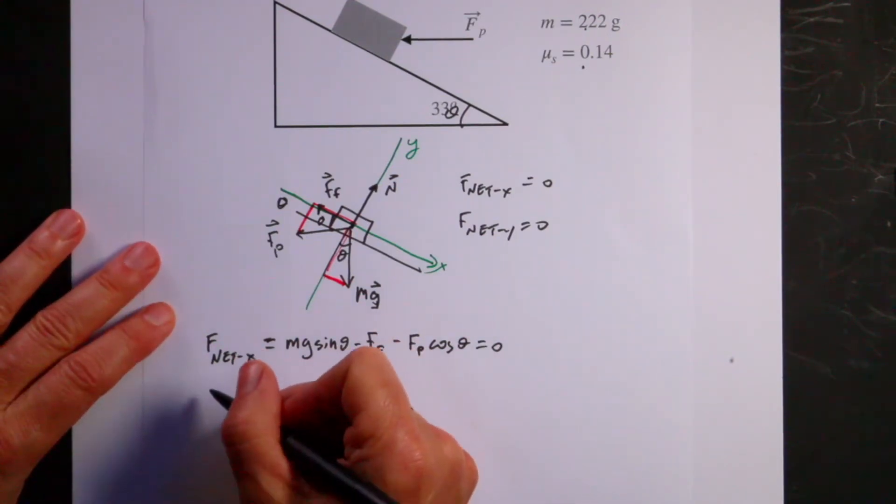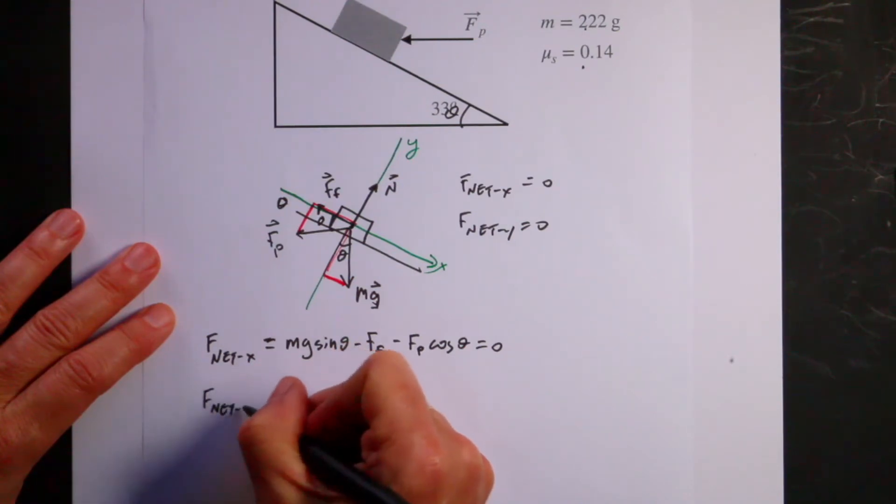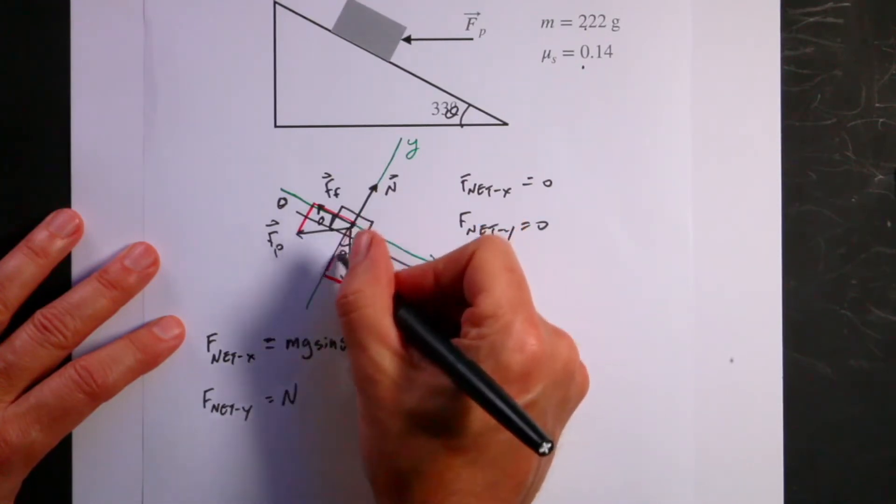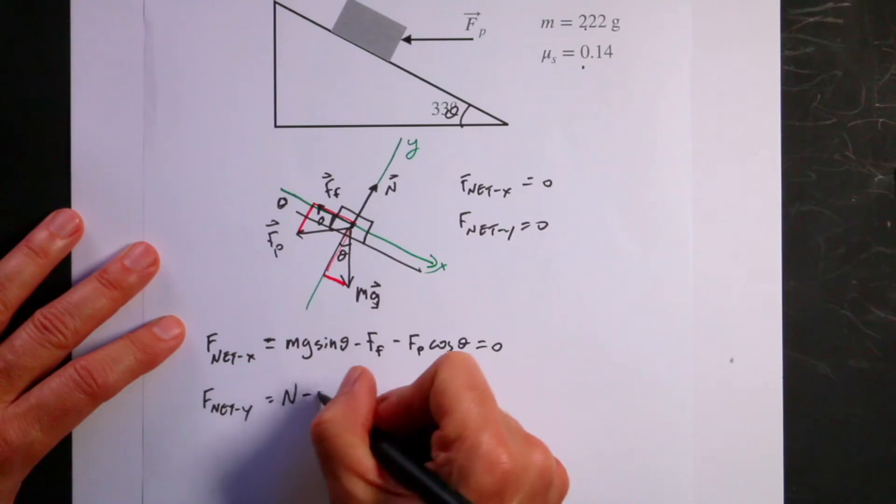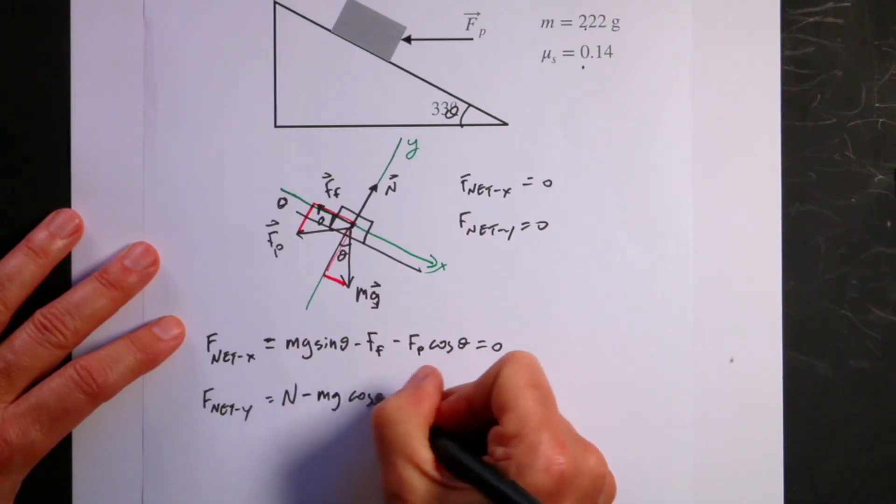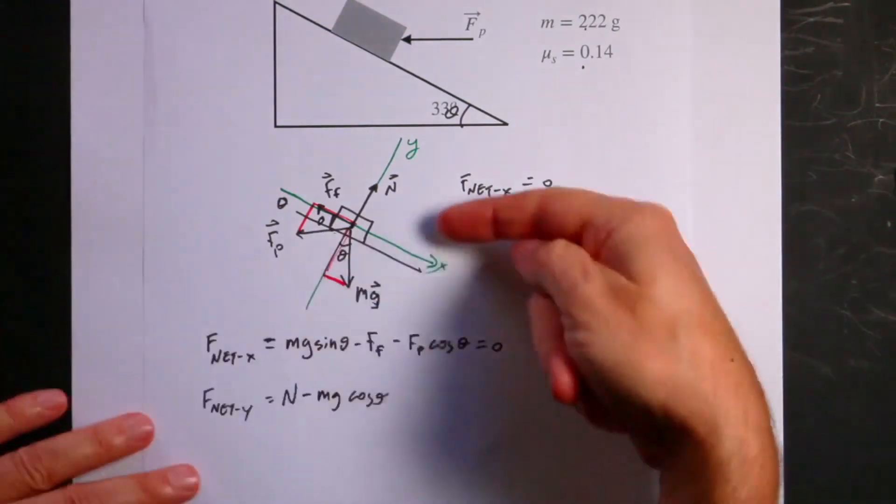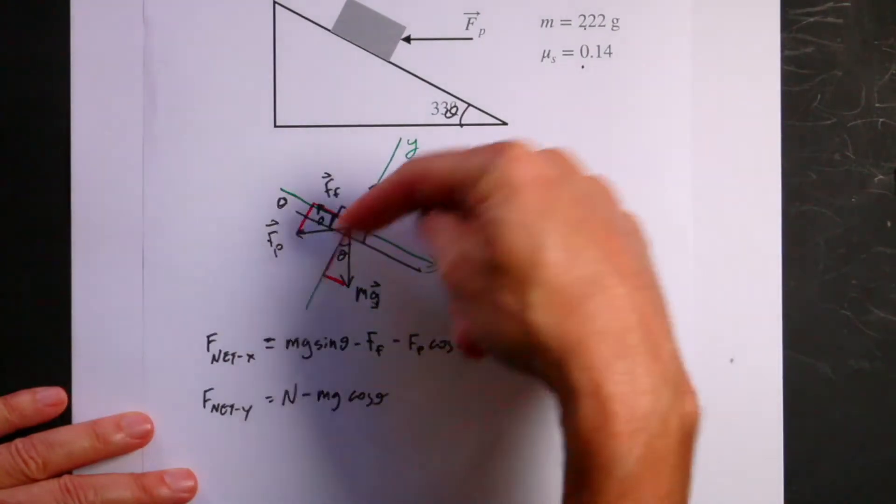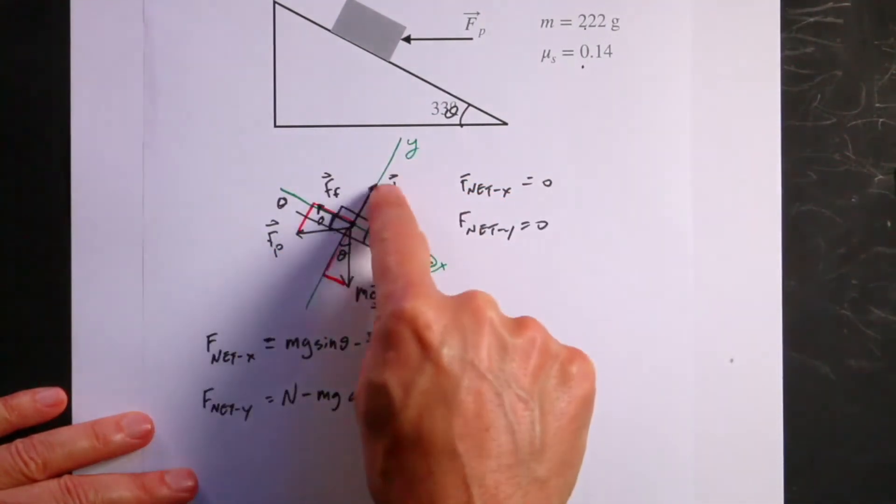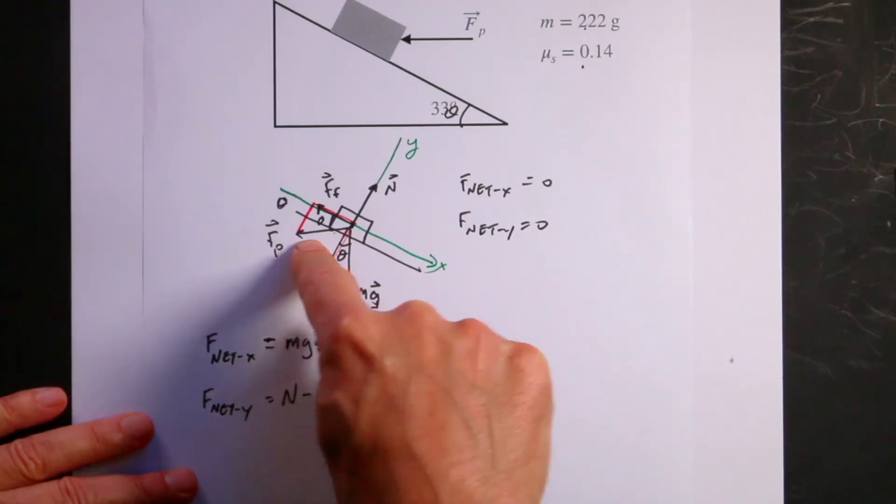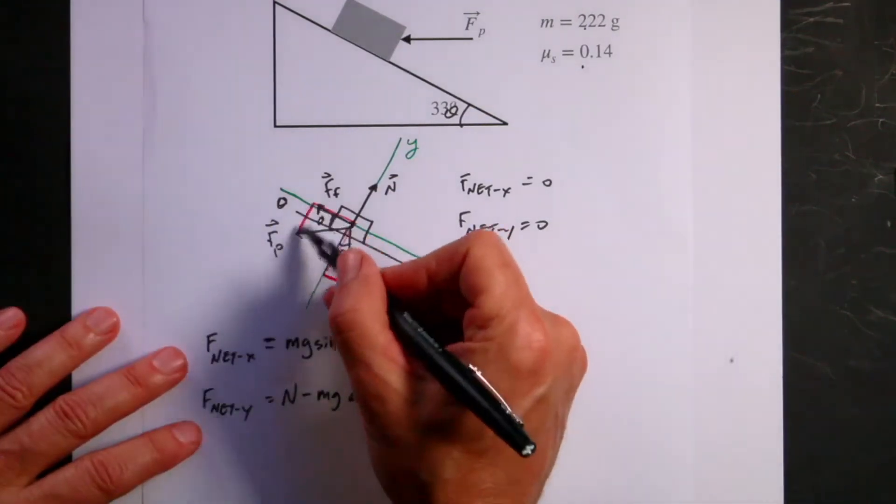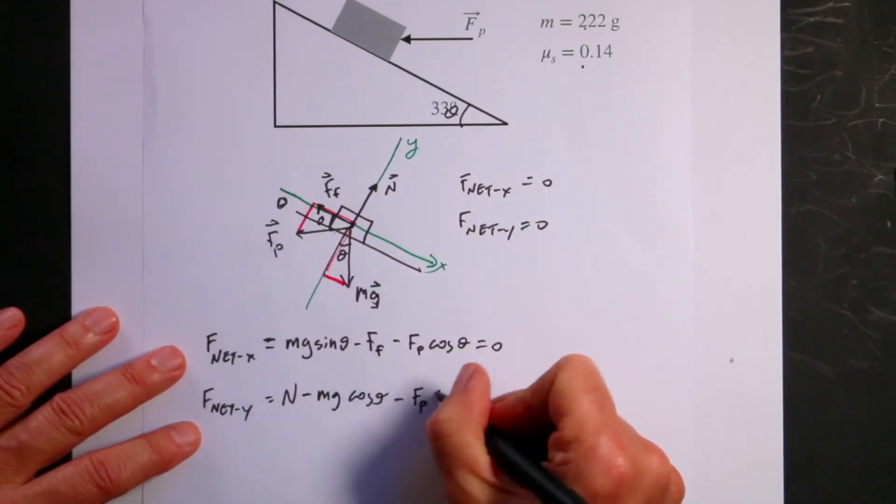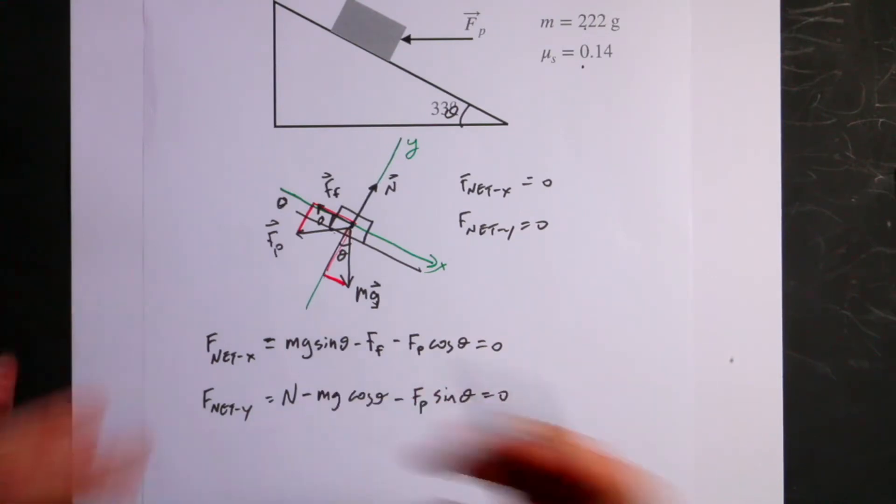Now what about the y forces? F net y. What forces do I have? I have the normal force pushing in the y direction, N. And then I have the y component of gravity, that's minus mg cosine theta. And this force is not only pushing to the left, it's also pushing the block into the surface, so that's going to increase the normal force. So Fp, the y component of Fp, I'm going to use the sine of that angle, so this will be minus Fp sine theta equals zero. So there I have two equations.